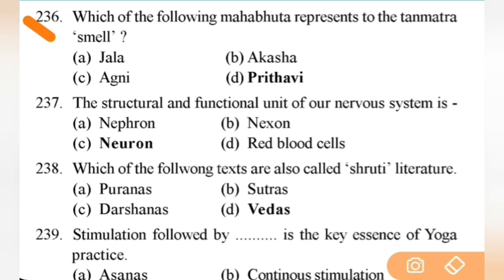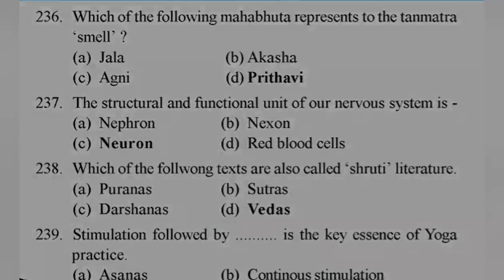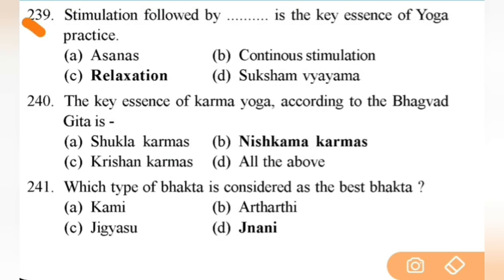Which Mahabhuta represents the Tanmatra of smell? Right answer is D — Prithvi — earth. Next: the structural and functional unit of our nervous system is the neuron. Next: which of the following texts are also called Shruti literature? Right answer is Vedas. Next: stimulation followed by — right answer is C — relaxation — is the key essence of yoga practice — very important. Next: the key essence of Karma Yoga according to Bhagavad Gita is Nishkama Karma.